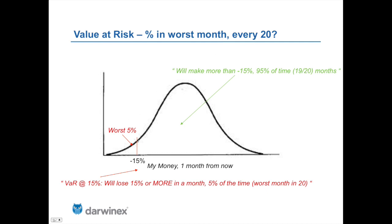In other words, by looking at the distribution we take the worst tail — the worst five percent probability. For instance, a strategy having a VaR of 15% will lose 15% or more in a month five percent of the time, which is why we say worst month in 20. The flip side is that the strategy will make more than minus 15% in 95% of the time, or 19 out of 20 months. That's how Value at Risk at DarwinX is defined.